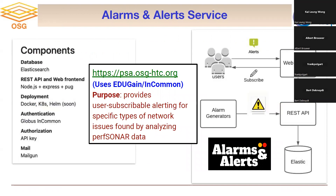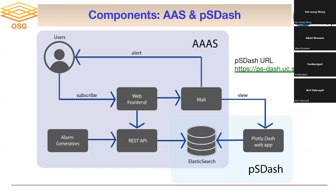We have an alerts and alarming service — one of the most requested things we've had over the last few years. People want to know if there's a network issue that impacts them. We have it at a website that shows how it's architected. We've augmented this with something called psdash, a Plotly-based application that lets us go in and explore the alerts we receive and find out more information. Psdash connects to the alerting service through Elasticsearch and allows exploration of the data. I encourage you to visit the URL and see what's available.